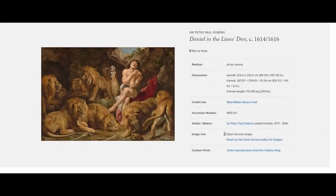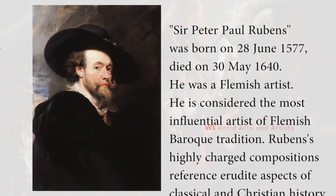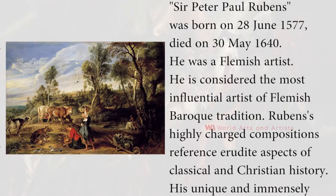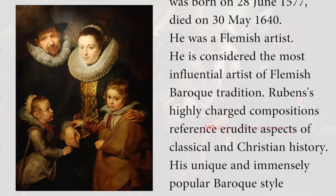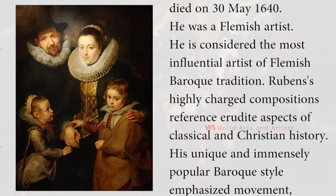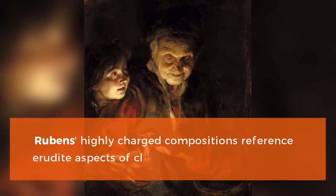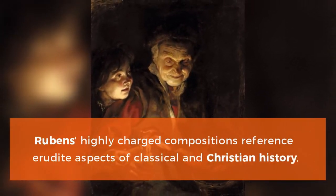Daniel was born on the 28th of June 1577, and died on the 30th of May 1640. He was a Flemish artist and is considered the most influential artist of the Flemish Baroque tradition. Rubens' highly charged compositions reference erudite aspects of classical and Christian history.